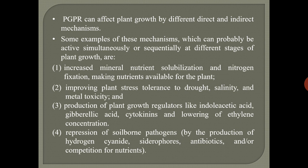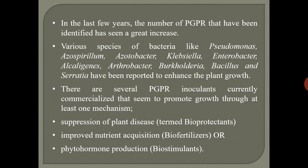Most of the bacteria exert a beneficial effect on plant growth and are termed plant growth promoting rhizobacteria. PGPR can affect plant growth by different direct and indirect mechanisms. Some examples include increased mineral nutrient solubilization, nitrogen fixation, improving plant stress tolerance to drought, salinity, and metal toxicity, and production of plant growth regulators like indole acetic acid, gibberellic acid, cytokinins, and lowering of ethylene concentration.